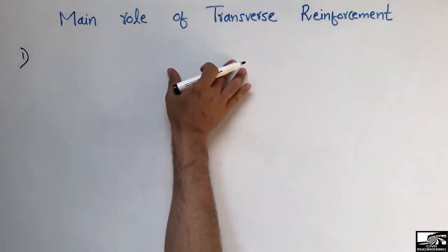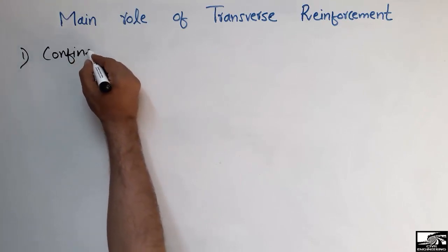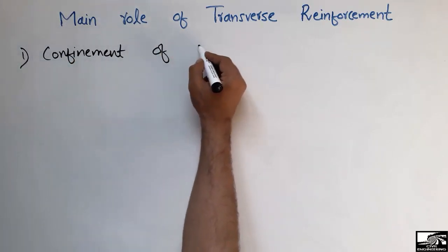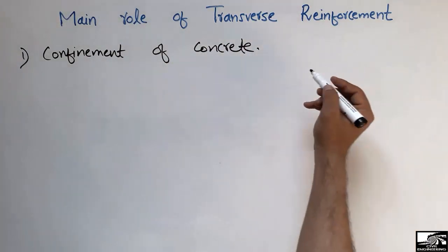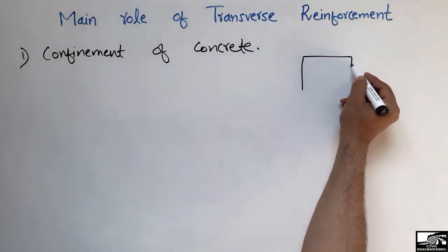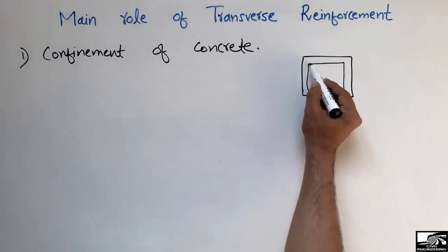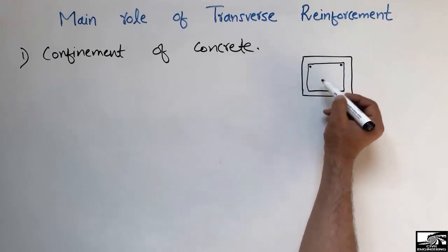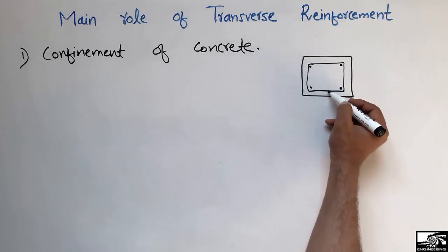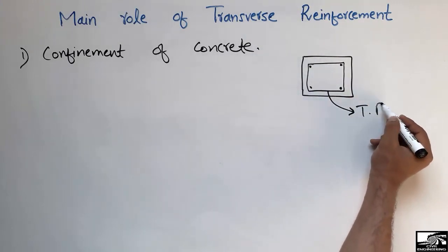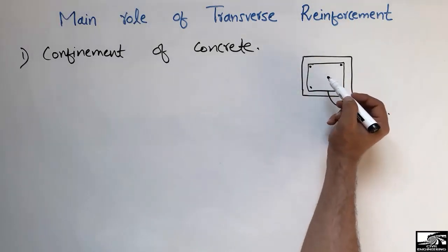The first purpose of providing the transverse reinforcement is for the confinement of concrete. For example, in a column cross-section, the transverse reinforcement surrounds the longitudinal bars. These are the transverse reinforcement elements, and they confine the concrete when load is applied.